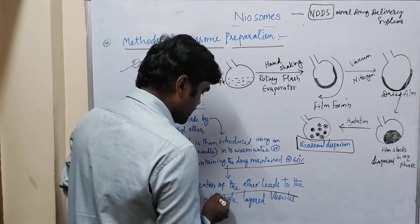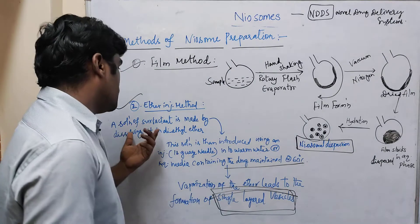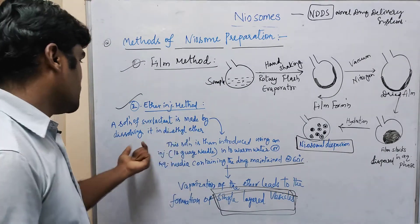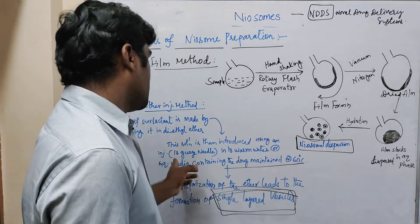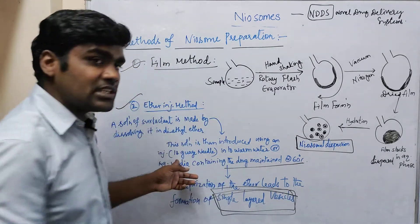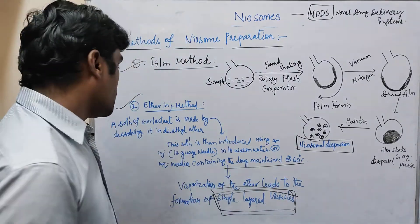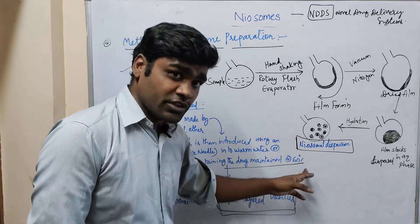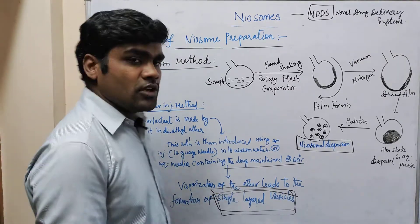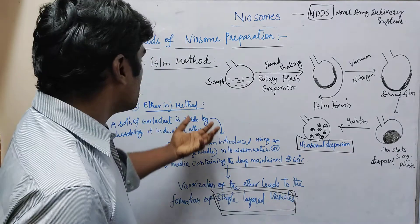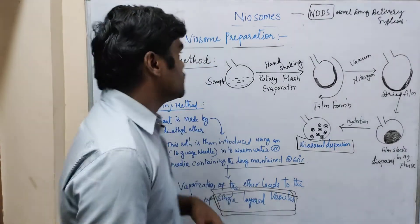The vaporization of the ether leads to the formation of single-layered vesicles. That is why this method is called the ether injection method. We introduce the surfactant-ether solution via needle into the aqueous drug media maintained at 60 degrees Celsius, and finally single-layered vesicles are obtained by vaporization of the ether. These are the steps involved in the ether injection method for getting neosomes.